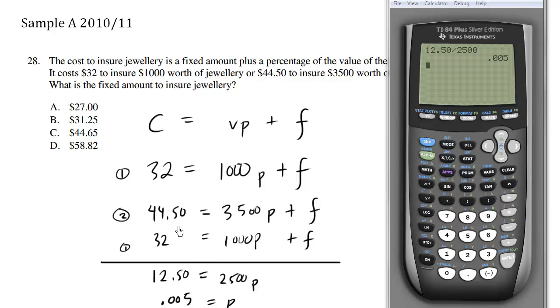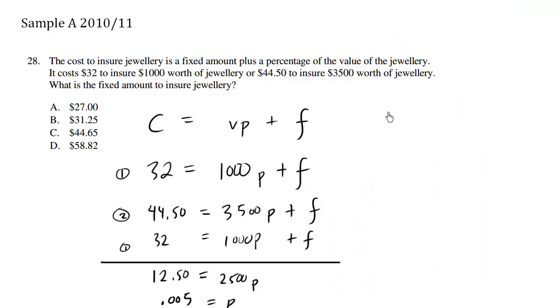Once we know P, we can choose either equation, equation one or equation two, to solve for F. I'll just use equation number one. 32 equals 1000P, which happens to be 0.005, plus F. 1000 times 0.005 becomes five. So F equals, I'm going to subtract five from both sides, we're going to get 27.